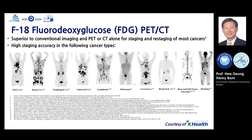F18 fluorodeoxyglucose, or FDG, is currently the most widely used radiotracer. PET-CT is superior to conventional imaging and PET or CT alone for staging and restaging of most cancers. It shows high staging accuracy in various cancers such as lung cancer, breast cancer, esophageal cancer, colorectal cancer, lymphoma, melanoma, cervical cancer, head and neck cancer, bone and soft tissue sarcomas, and myeloma, as shown in this slide.